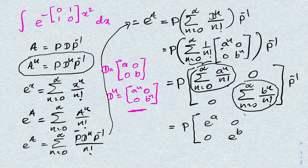By the power series representation, this equals P times the matrix [[e^a, 0],[0, e^b]] times P inverse. So we have defined e to the matrix A as P times [[e^a, 0],[0, e^b]] times P inverse.